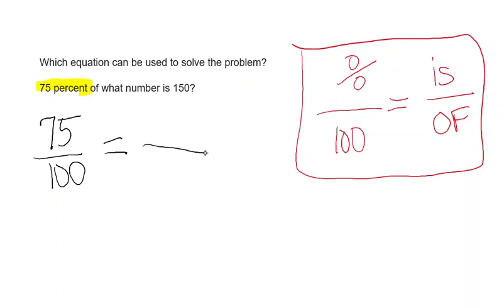Now we have of what number, so the of portion is the unknown, so we can put a question mark there. We do not know the of of what number, but we do know that it is 150. So where we see the word is, we put 150.